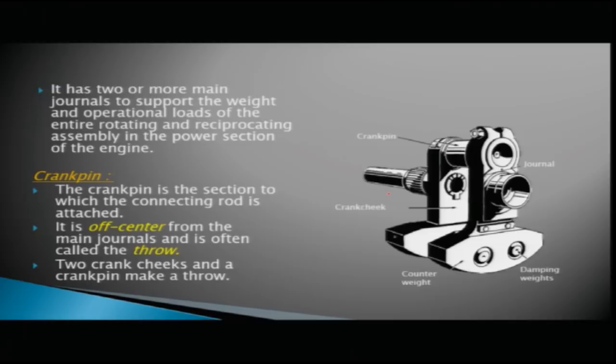The crank pin is the section to which the connecting rod is attached. It is off-center from the main journal and is often called the throw. Two crank cheeks and a crank pin together make a throw. The crank pin is also called the connecting rod bearing journal because the connecting rod is attached to it.